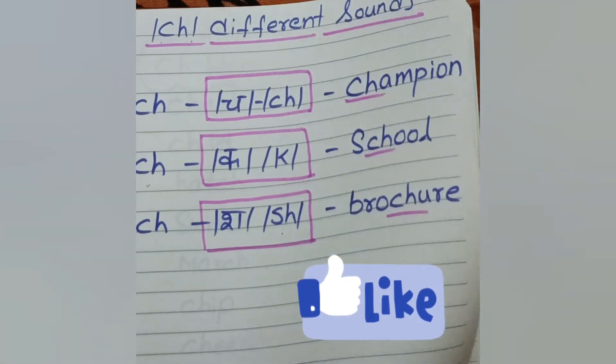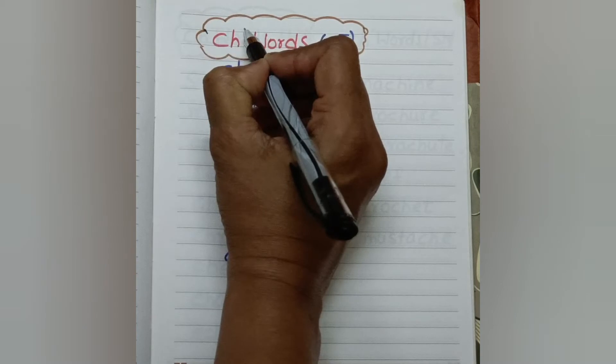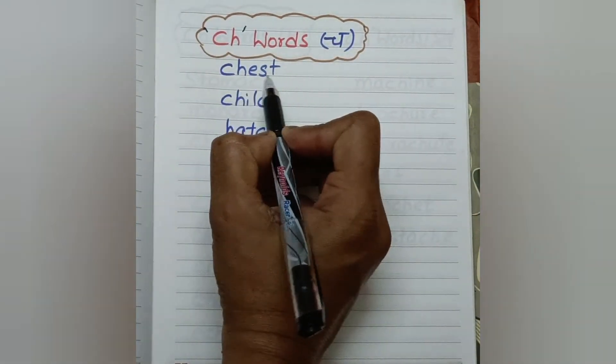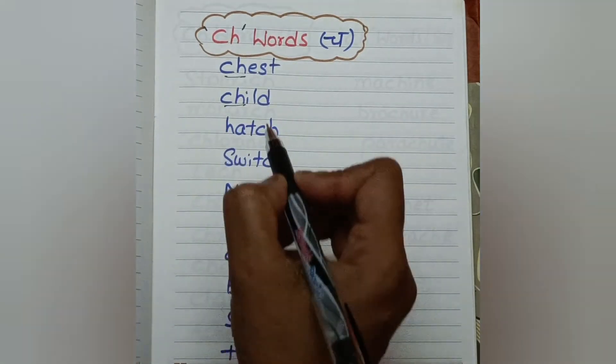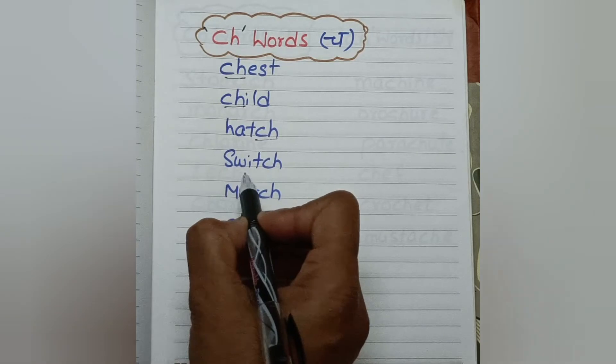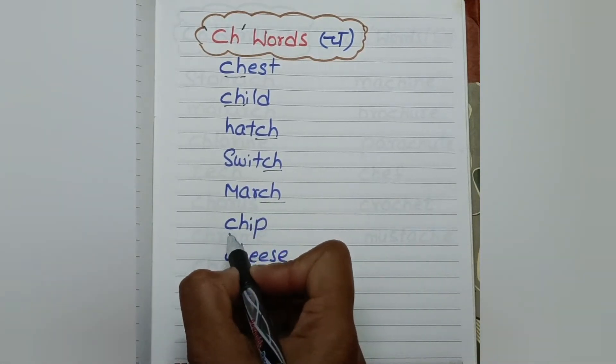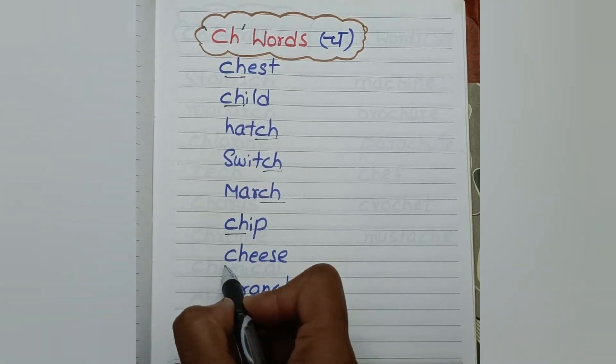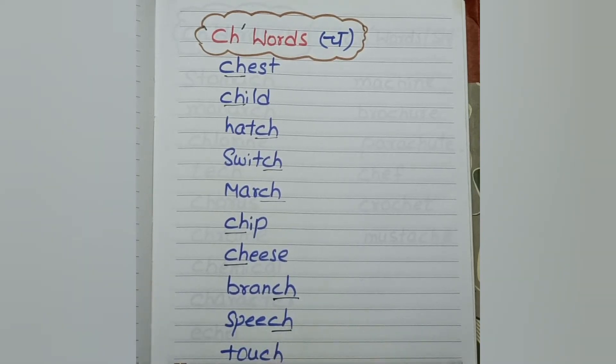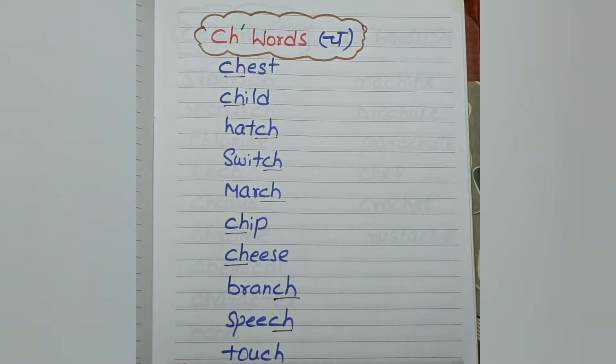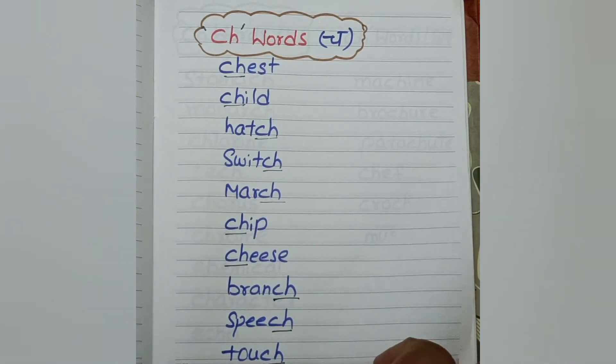So these are the list of CH sound. CH sound is CH in these words: chest, child, hatch, switch, march, chip, cheese, branch, speech, and touch. So there is specifically no rule where to use CH sound, where to use K sound, and where to use SH sound.